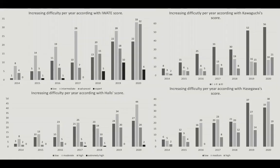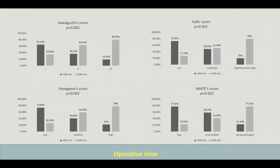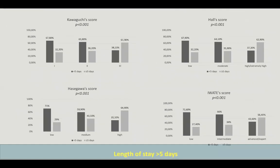During the observation period, we noted an increasing difficulty score across all scoring systems over the last few years, with more patients submitted to more complex surgical interventions. According to the results, all four scores were correlated with blood loss greater than 500 milliliters. Operative time was also well correlated with the difficulty scores, as was length of hospital stay, with a significant correlation in all cases.